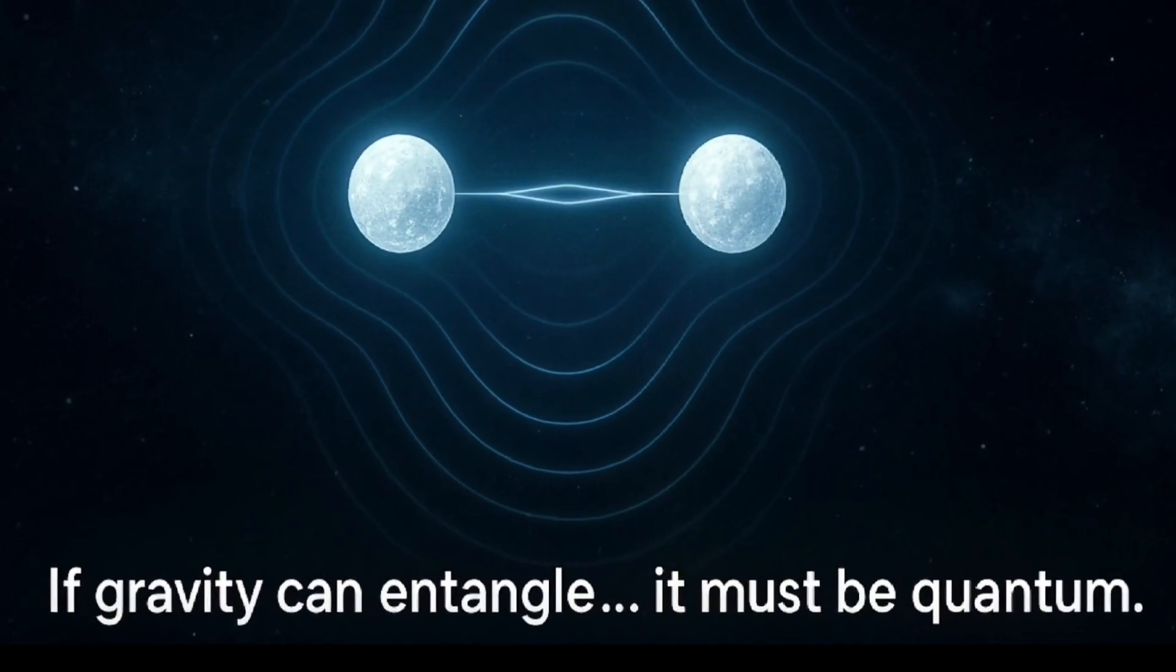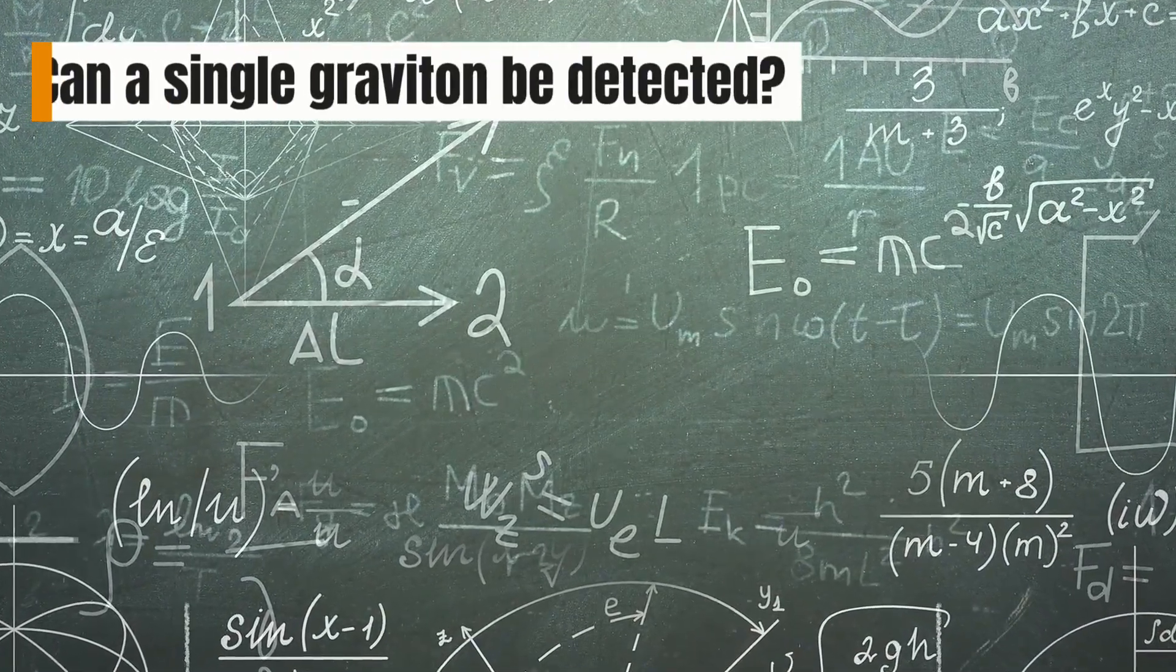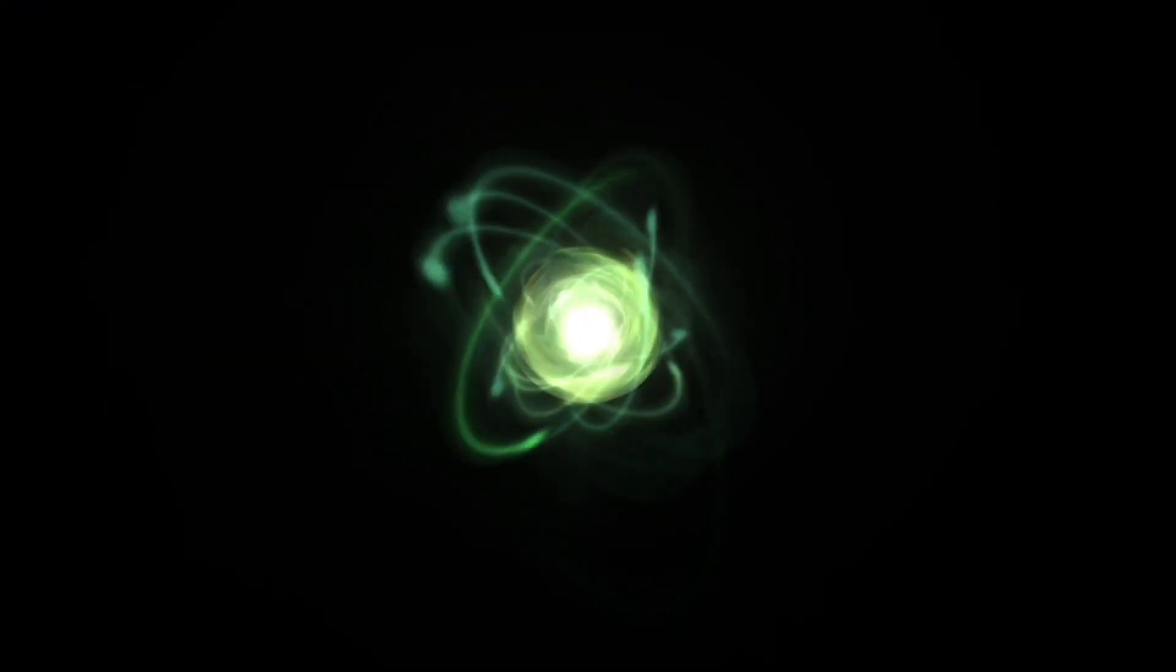In practice, this means gravity is completely massless for us and stretches across the universe. And here comes the problem. In theory, the graviton exists, but detecting a single graviton is almost impossible.